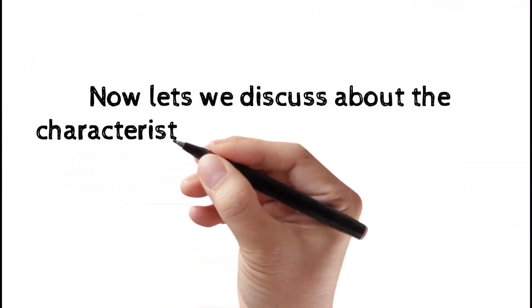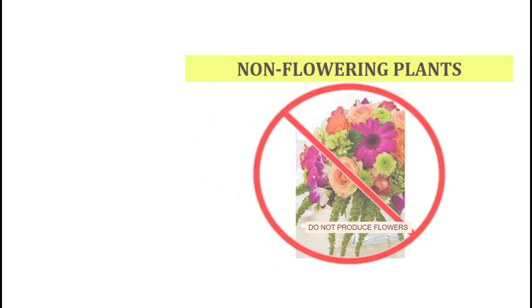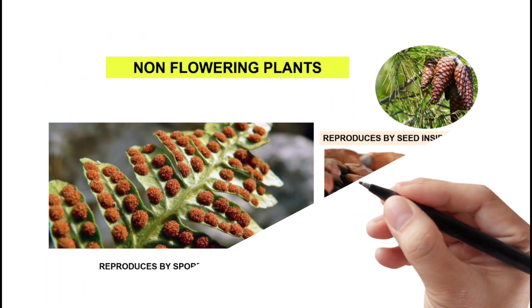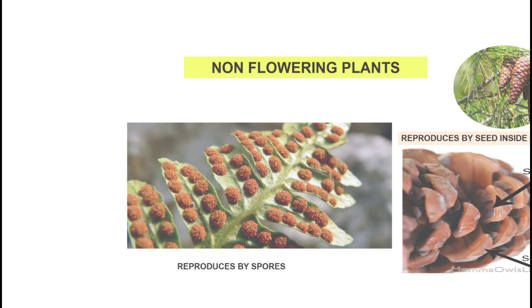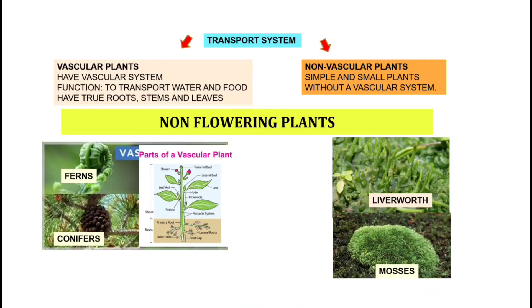Let me discuss the characteristics of non-flowering plants. Non-flowering plants do not produce flowers and also do not produce fruits. Ferns reproduce through spores, meanwhile the conifers will reproduce by seeds inside the cones. The transport system in ferns and conifers is called vascular. Meanwhile, mosses are called non-vascular.